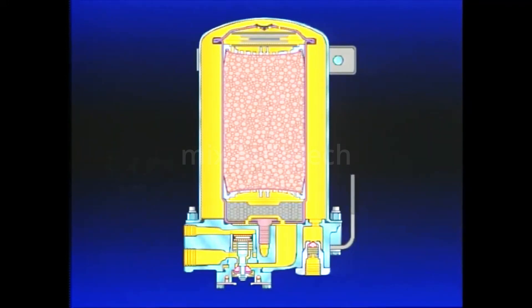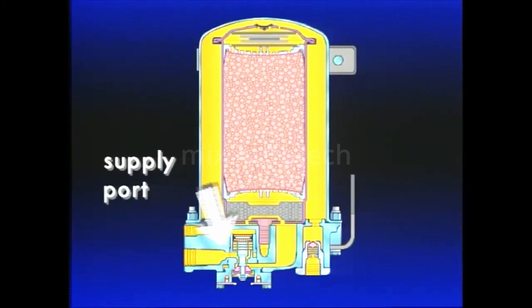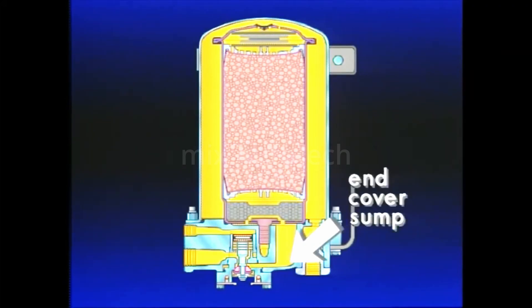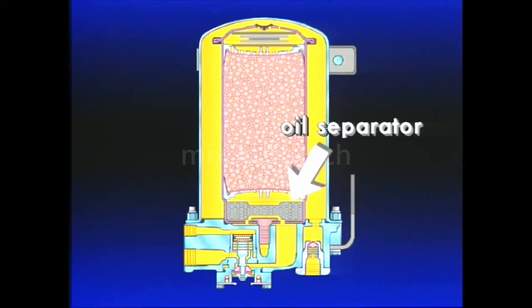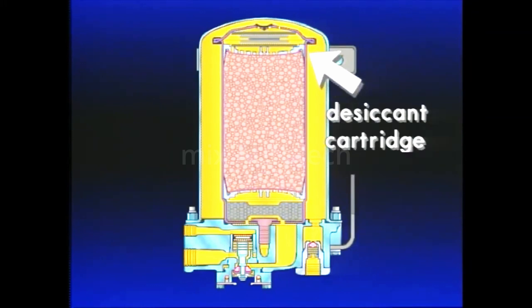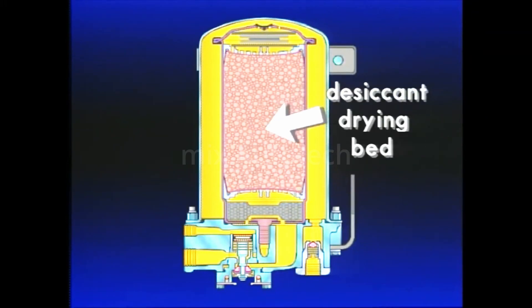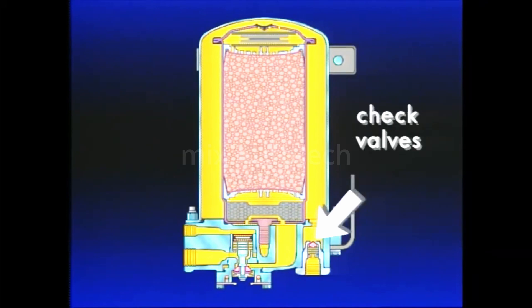The air dryer includes the supply port, end cover, end cover sump, oil separator, desiccant cartridge, desiccant drying bed, and check valves.